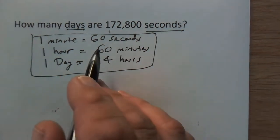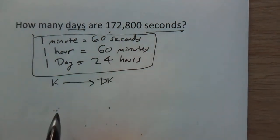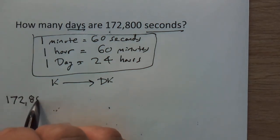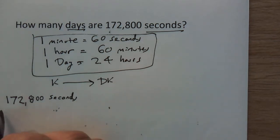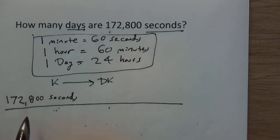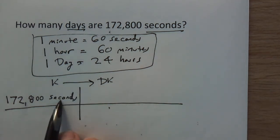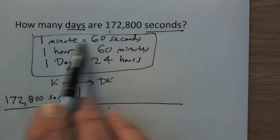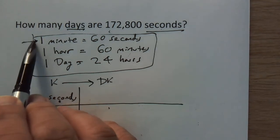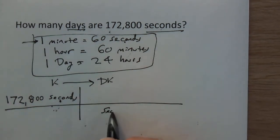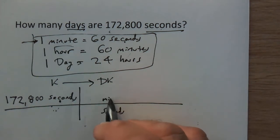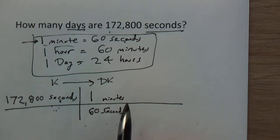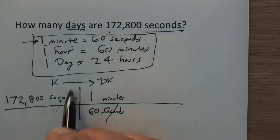Again, start with what we know and go to what we don't know. We know we have 172,800 seconds, so I write that down and draw a line to start my picket fence. I put the first picket in: seconds are on top and I want seconds to go away since I'm converting to days. Looking at my conversion factors that have seconds — that's one minute equals 60 seconds — I put seconds on the bottom and minutes on top, with one next to minutes and 60 next to seconds. Seconds cancel out.